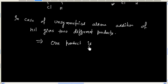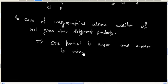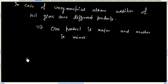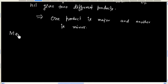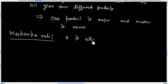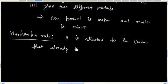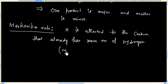So one product is major and another is minor. Now which product will be major? This can be decided by Markovnikov's rule. This rule says hydrogen is attached to the carbon that already has more number of hydrogens. And this product is the major product.